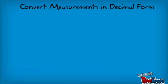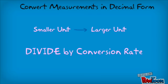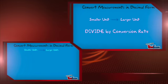So to convert a measurement from a smaller unit to a larger unit, you must divide the smaller unit by the conversion rate.